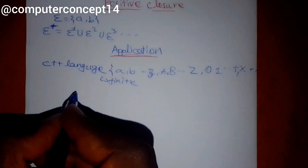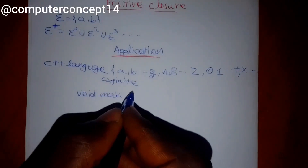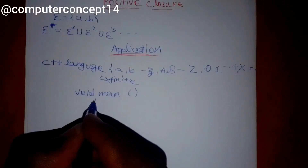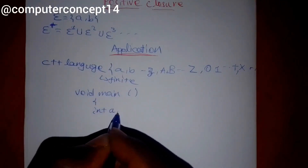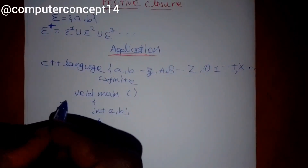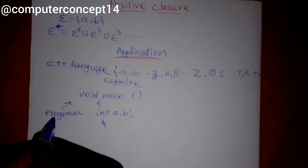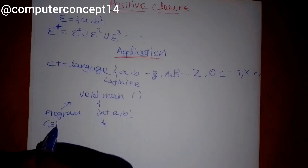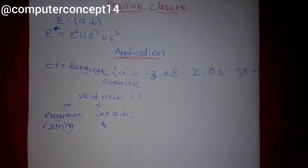Let's say another example. Void main. So this function now — if you declare a, b, then a second. Here, this is a program. In our sense, this one is a string. So if you have a string, then a string is a string.